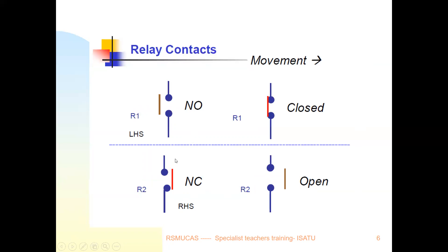Another type of switch we use is the relay switch, where contacts are represented by a similar symbol but without a lever, since it is not manually operated but electrically controlled. When a relay is activated, its normally open contacts tend to close, while the normally closed contacts open simultaneously, because a relay has both normally open and normally closed contacts.